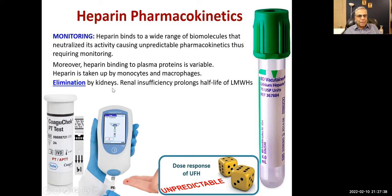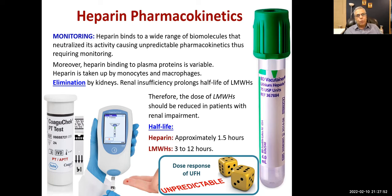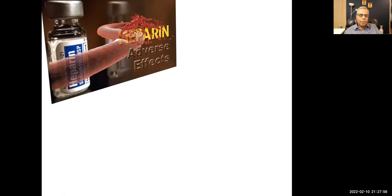Elimination is by kidneys. Renal insufficiency prolongs the half-life of low molecular weight heparin; therefore the dose should be reduced in renal insufficiency. Half-life of heparin is 1.5 hours; low molecular weight heparin is 3 to 12 hours.